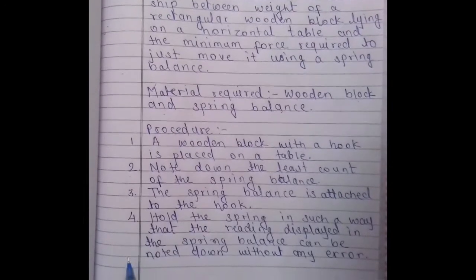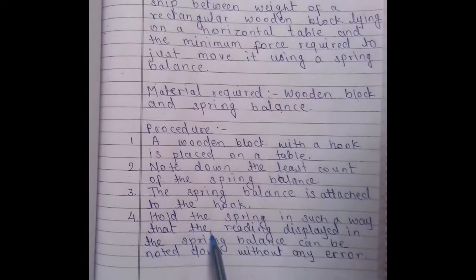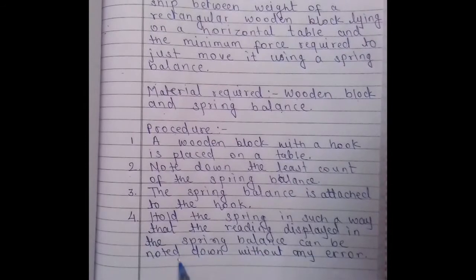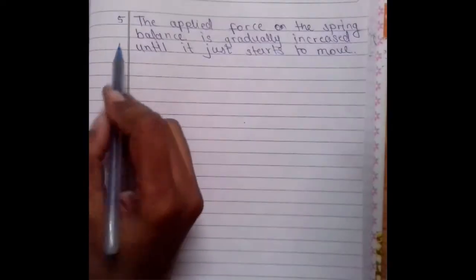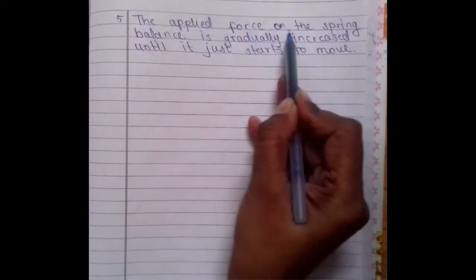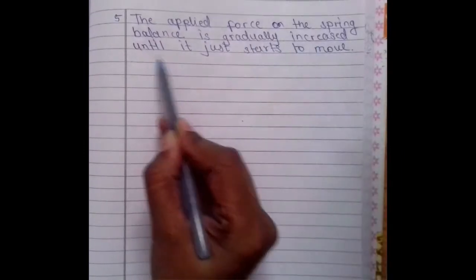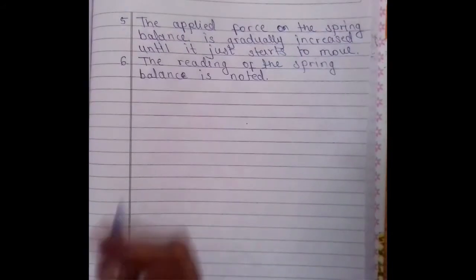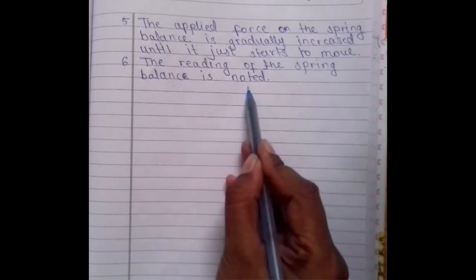Point number four: Hold the spring in such a way that the reading display in the spring balance can be noted down without any error. Point number five: The applied force on the spring balance is gradually increased until it just starts to move. Point number six: Notice the reading of the spring balance is noted.